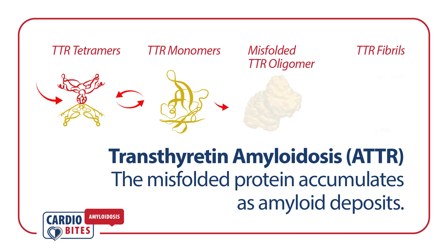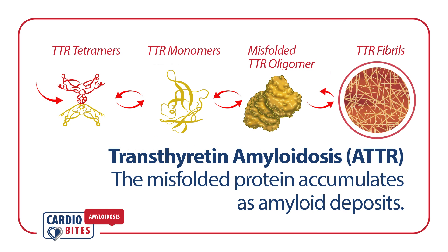Transthyretin amyloidosis, or ATTR, occurs when the transthyretin protein becomes misfolded and accumulates as amyloid deposits.